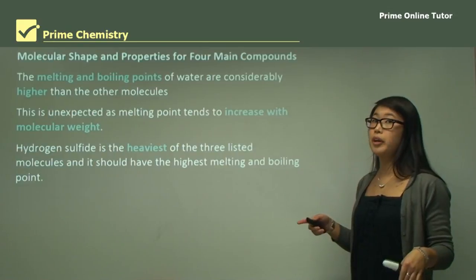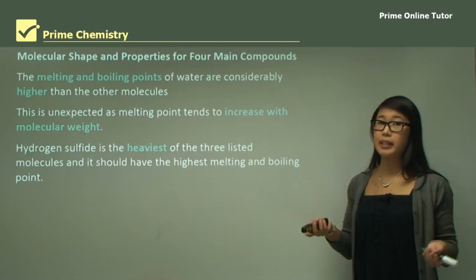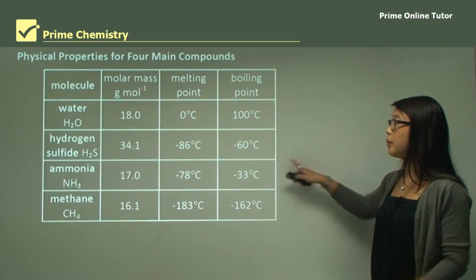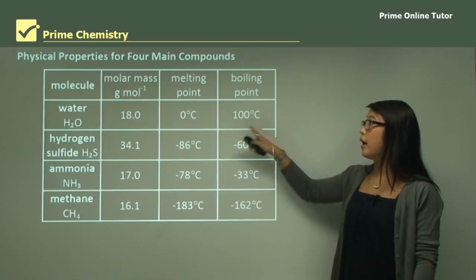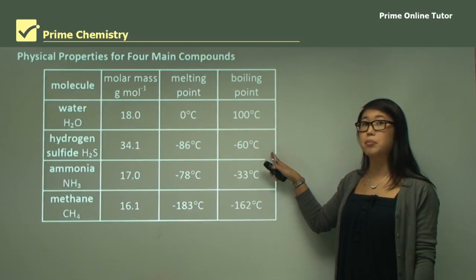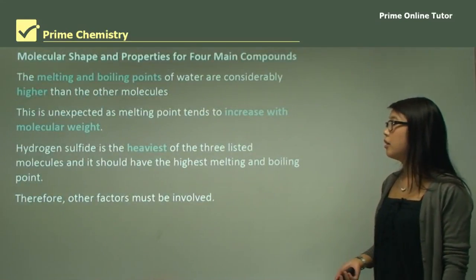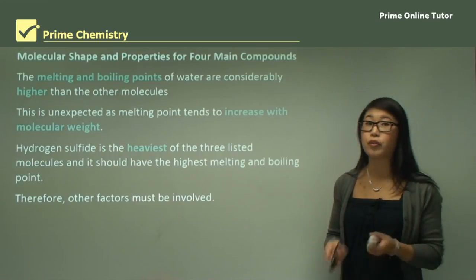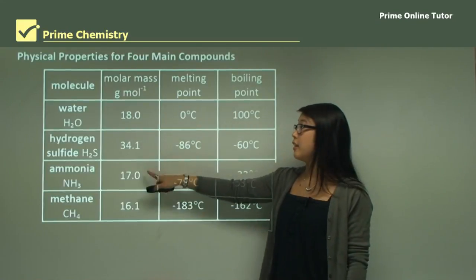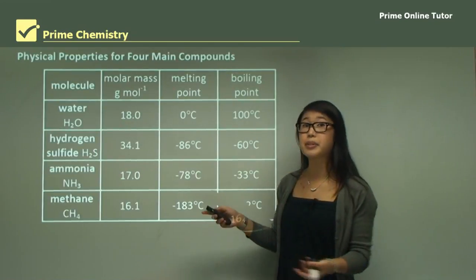But with water and hydrogen sulfide, H₂S is the heaviest of the three listed, so we'd expect it to have the highest melting and boiling point — but this isn't true. Water is quite light yet has a high melting and boiling point, while H₂S, being heavier, has a considerably lower melting and boiling point. Water is only 18 g/mol and H₂S is more than double — so there must be something else involved other than the weight.